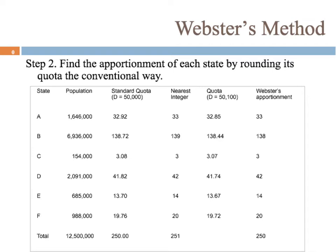Here's step two, and this is where all the work is really done. Looking at the standard quota column, the standard divisor is 50,000. These numbers all add up to a perfect 250, but we have to round so each state has an exact number of seats. So instead of rounding all the way up or all the way down for every one, we're going to round conventionally. For example, 32.92 rounds to 33, 38.72 rounds to 139, 3.08 rounds down to 3, and 41.82 rounds up to 42.